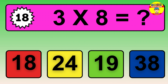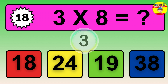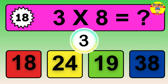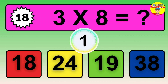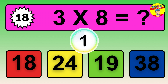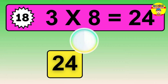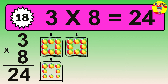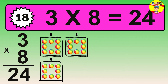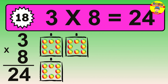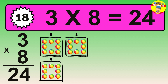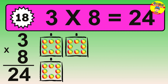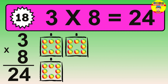Question 18. Three times eight equals what? So the answer is three times eight is twenty-four. To calculate, we have three groups with eight balls each one. So how many balls do we have? Twenty-four balls.